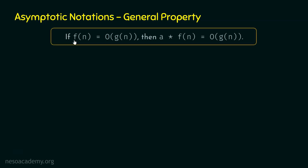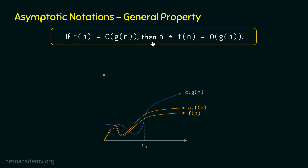The property is: if F(n) is O of G(n), then A times F(n) is also O of G(n), where A is some constant. If G(n) is asymptotically bigger than F(n), then G(n) is also asymptotically bigger than A times F(n). This means if the growth rate of G(n) is more than the growth rate of F(n), then the growth rate of G(n) will still be higher than the growth rate of A times F(n), where A is multiplied as a constant.